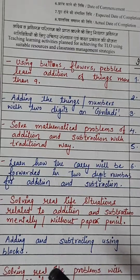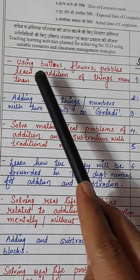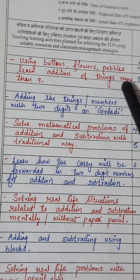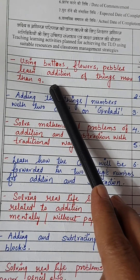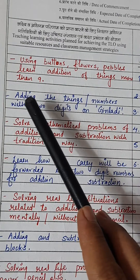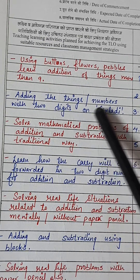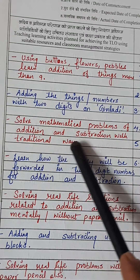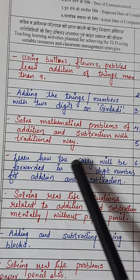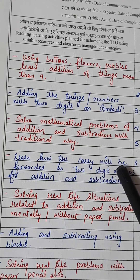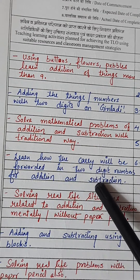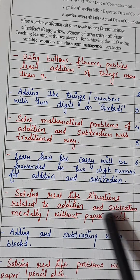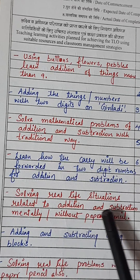Now the activities to be planned: first, using buttons, flowers, and pebbles to learn addition of things more than nine, since we are talking about two-digit numbers. Adding numbers with two digits on the ginlady, solving mathematical problems of addition and subtraction in the traditional way, learning how the carry will be forwarded in two-digit numbers, and solving real-life situations related to addition and subtraction mentally or without paper and pencil.